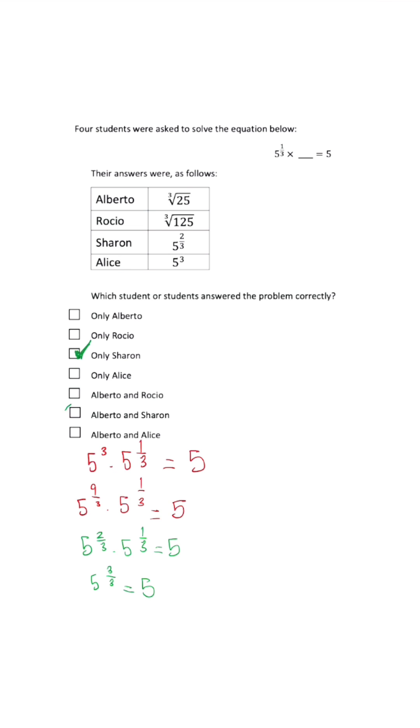I'm also going to look at Alberto's answer. But let's look at Rocio's first. When we look at Rocio, the cube root of 125 is just 5.